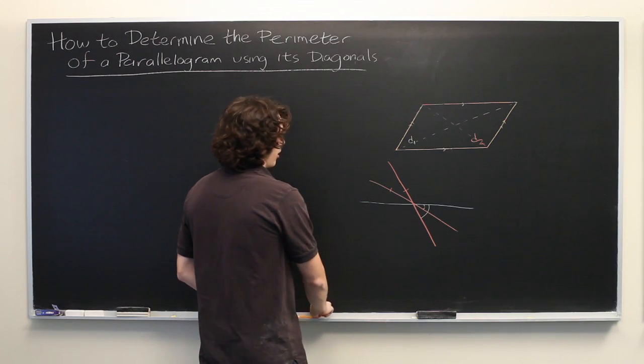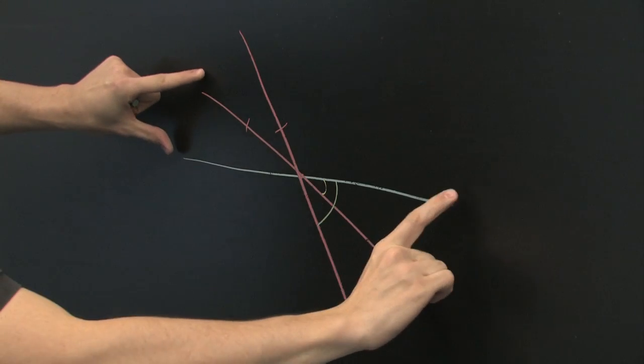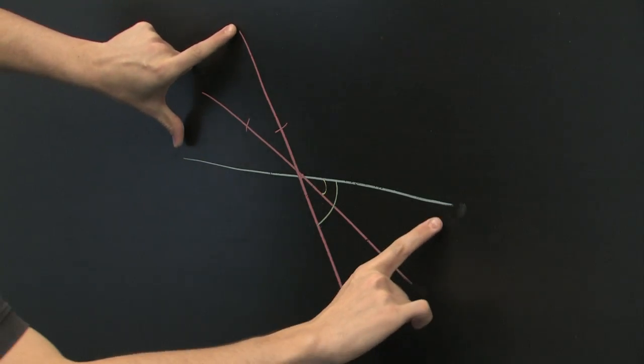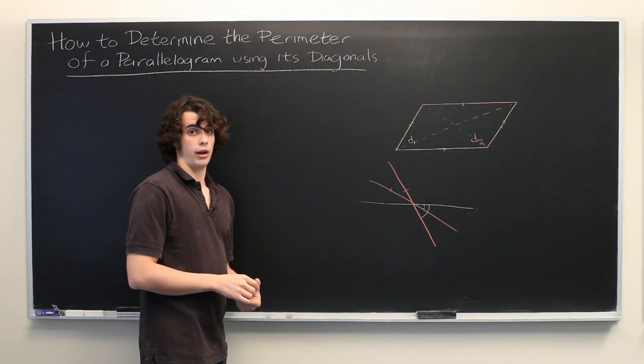Now if you were to draw a parallelogram that connected these corners and a parallelogram that connected these four corners, you would find that they would have very different perimeters and also very different areas.